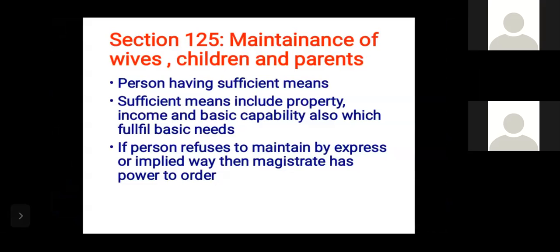The word 'maintenance' is not defined in CrPC 1973, but Section 125 mentions maintenance of wife, children, and parents. Religious laws such as Muslim personal law talk about maintenance of wives only, whereas CrPC extends it to children and parents as well. Section 125 clarifies that a person having sufficient means — including property, income, and basic capability to fulfill basic needs — is liable to pay maintenance.